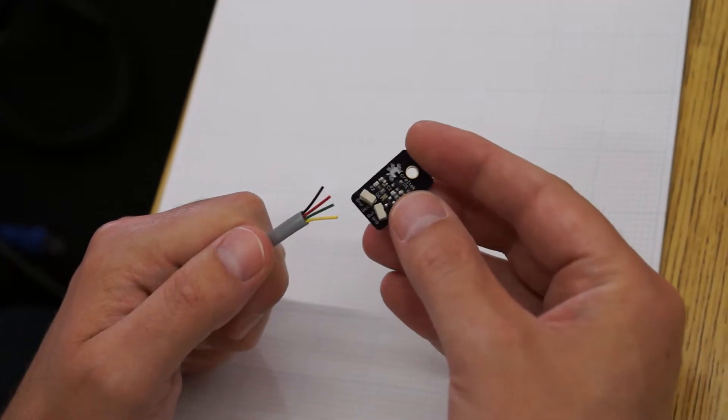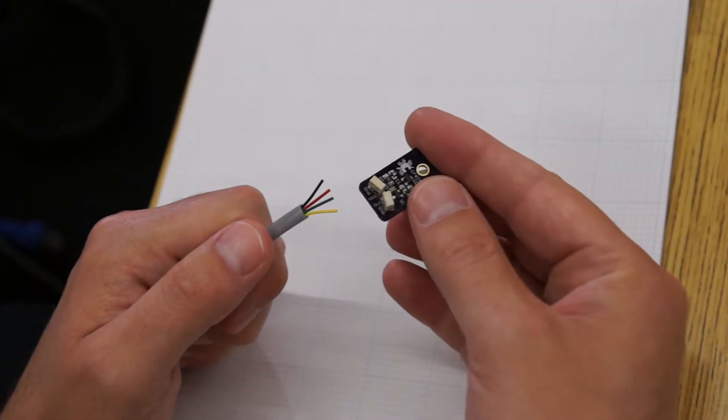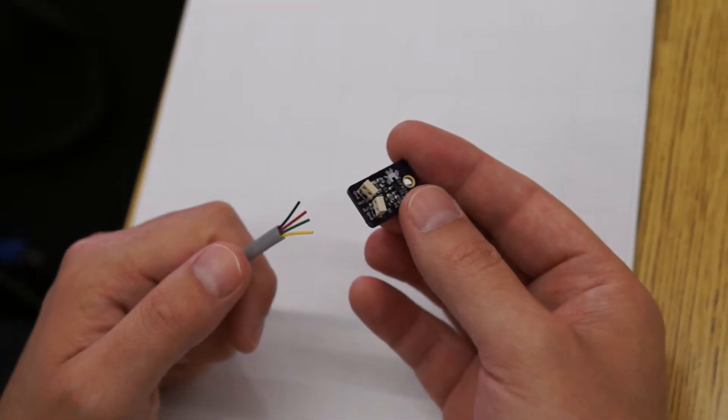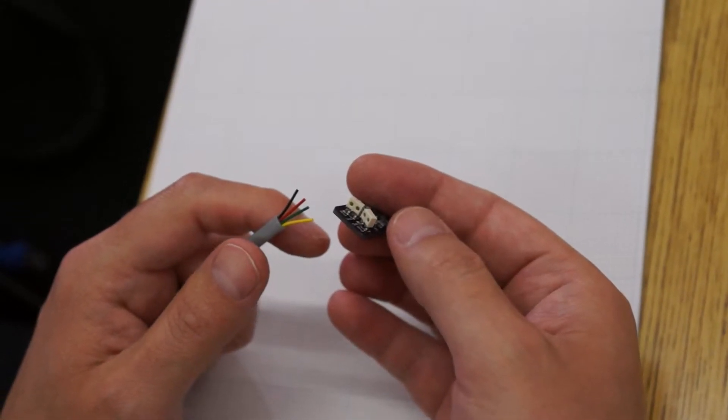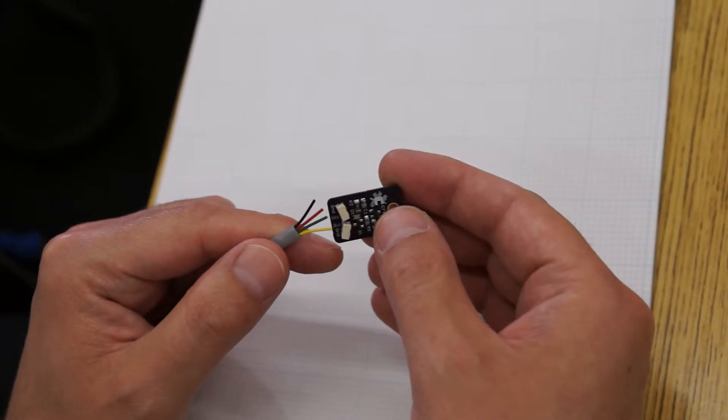The connectors on the sensor board are miniature insulation displacement wire-to-board connectors. Make sure that the wires are fully inserted into the holes before crimping them down.